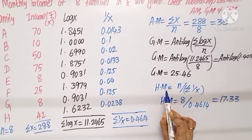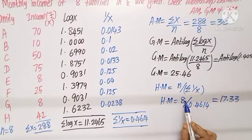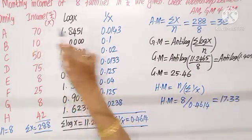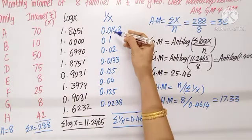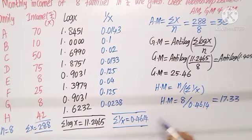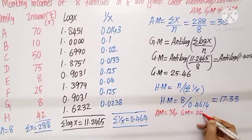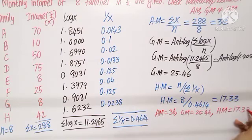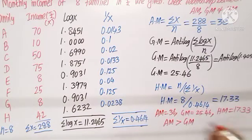For harmonic mean with ungrouped data: HM = n divided by sigma(1/x). With n = 8, compute sigma(1/x): 1/70 + 1/10 + 1/50 and so on, totaling 0.4614. HM = 8 / 0.4614 = 17.33. Checking the values: AM = 36, GM = 25.46, HM = 17.33. AM is the biggest, AM > GM > HM — the relationship between the averages is verified.